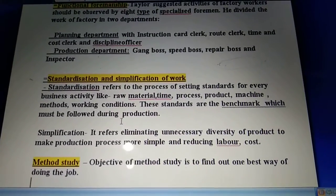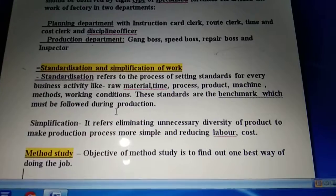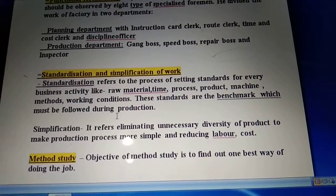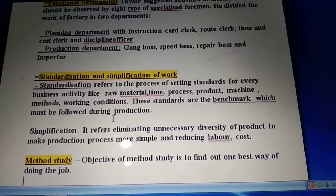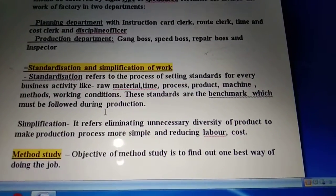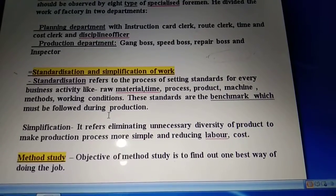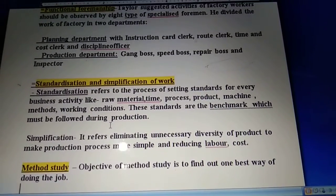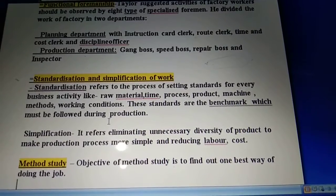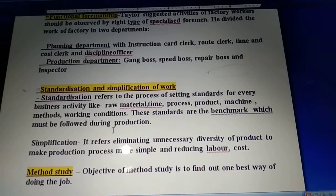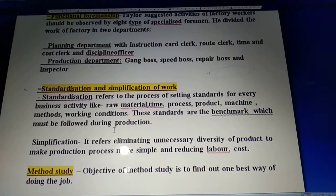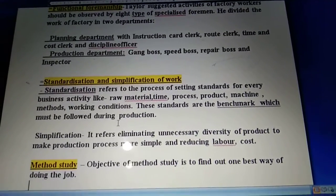Next is simplification. This technique refers to eliminating or removing unnecessary diversity of products to make the production process simple and reduce labor costs. Taylor said we should make production work more simple, and this is possible only if we remove unnecessary diversification of products - meaning we make products of a similar nature.